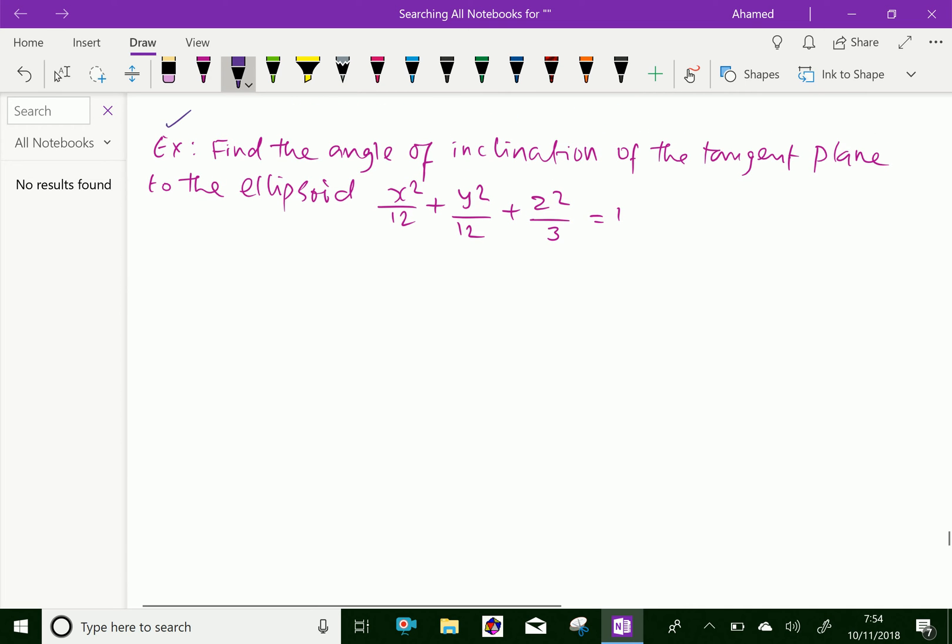Find the angle of inclination of the tangent plane to the ellipsoid X²/12 + Y²/12 + Z²/3 = 1 at the point (2, 2, 1).